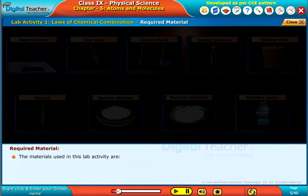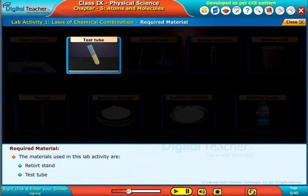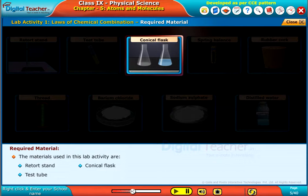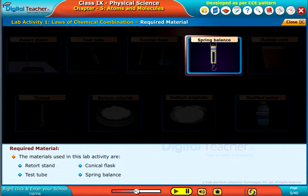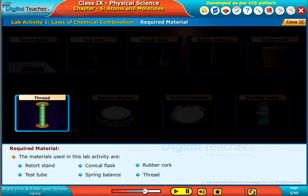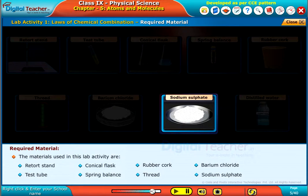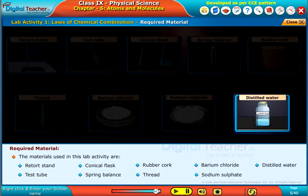The materials used in this lab activity are retort stand, test tube, conical flask, spring balance, rubber cork, thread, barium chloride, sodium sulfate, and distilled water.